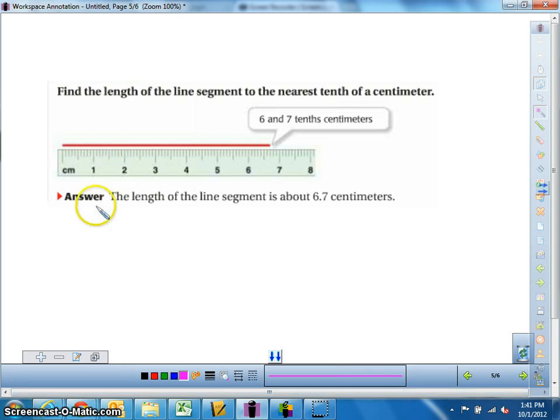We're going to do another example here. Find the length of the line segment to the nearest tenth of a centimeter. So again, just what we were doing before, we're looking at our ruler here. We know that it's six full centimeters. And then just part of that next one, it's over the halfway line. So I'm looking at this bigger line here. It means five millimeters. It goes two more. So it's 6.7 centimeters, just like it says here.